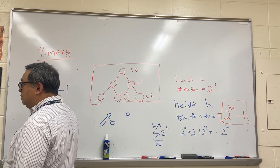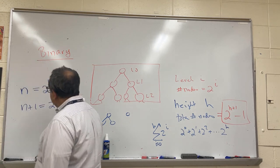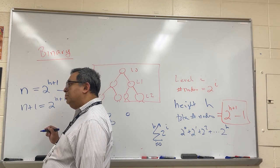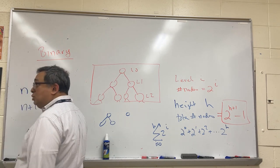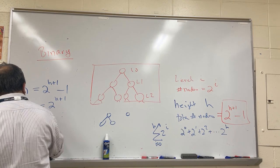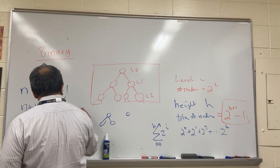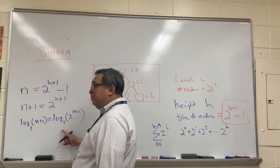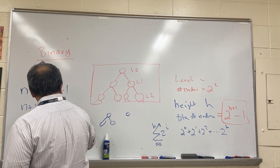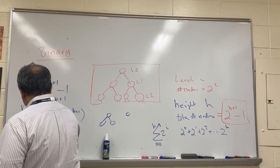Starting from n = 2^(h+1) - 1, the first step is n + 1 = 2^(h+1). Now comes the hard part - how do I get rid of the 2? Take log base 2 of both sides. So log₂(n + 1) = log₂(2^(h+1)). The right side simplifies to h + 1, and the left side is log₂(n + 1).